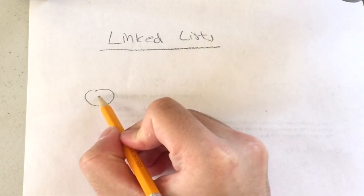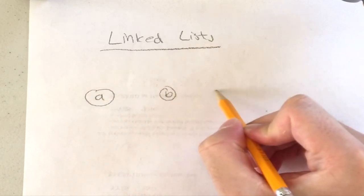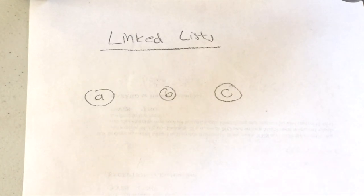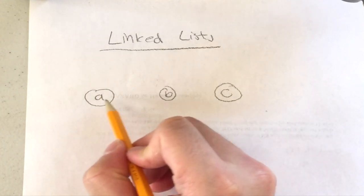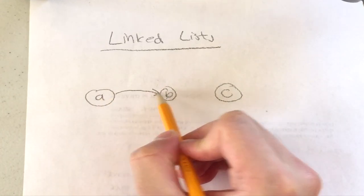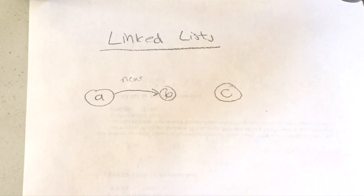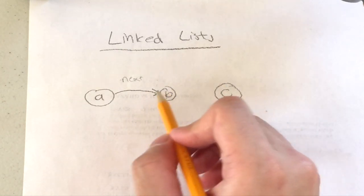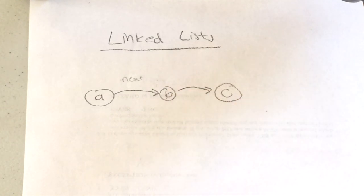A linked list is basically, from the name of it, a list — a list of objects arranged by links. So let's say I have objects labeled A, B, and C. If I insert A into the list and then insert B, it connects A to B using a pointer. We call this the 'next' pointer — A's next is B. And if I insert C, B's next pointer — because B is the last element — points to C.